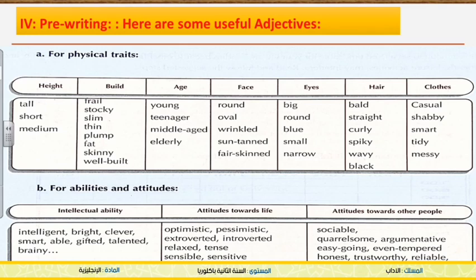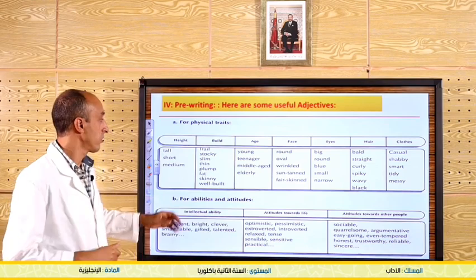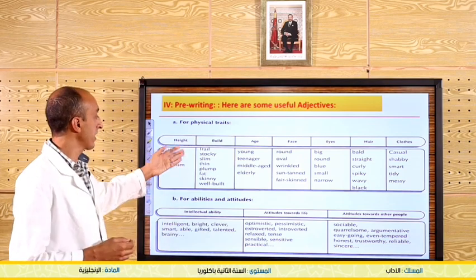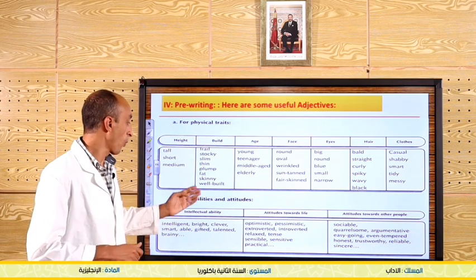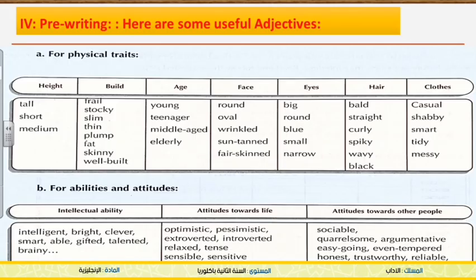For height, you can say tall, short, or medium. Concerning build, we can speak about slim, thin, fat, etc. Concerning age, we can speak about young, teenager, middle-aged, elderly — that is, very old. Concerning face, we are speaking about round face, oval face, not wrinkled, suntanned, or fair skin.